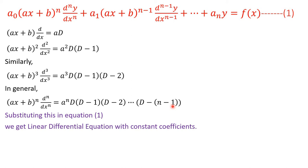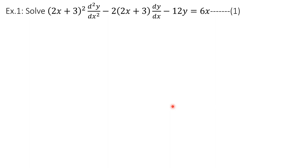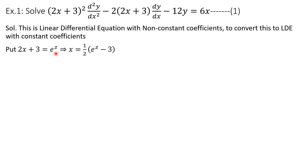Substituting all these differential terms into equation (1), we get a linear differential equation with constant coefficients, which we can solve using previously learned methods. Let us solve one example: (2x+3)²·(d²y/dx²) − 2(2x+3)·(dy/dx) − 12y = 6x. This is a linear differential equation with non-constant coefficients — specifically a Cauchy's equation where ax+b = 2x+3, so a = 2.